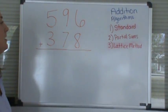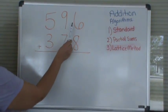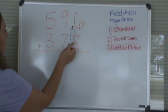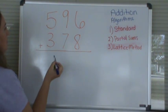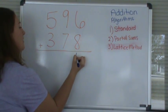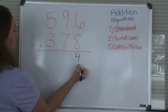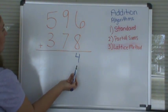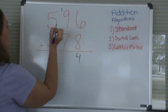So first we'll start with the standard method. In the standard method you add from the ones value over to the left. So we will add 6 plus 8, which is 14. Then in the standard method we record our ones value, and if there are any tens we carry them. So 14, we carry one set of tens.